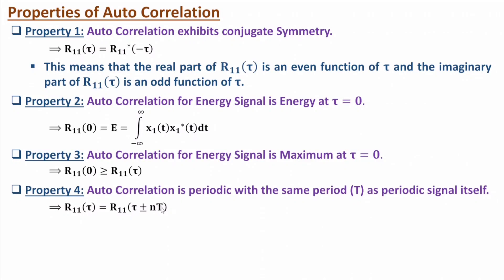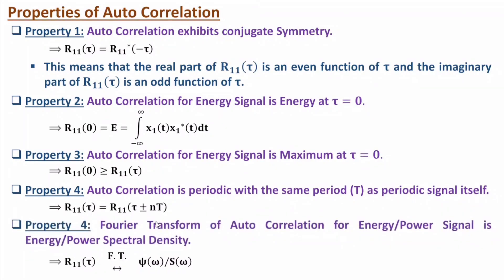The last property is based on the Fourier transform of auto correlation. For an energy or power signal, the Fourier transform of the auto correlation gives the energy spectral density or power spectral density S(ω). So if you take the Fourier transform of the auto correlation of a power signal, that will be the power spectral density S(ω).